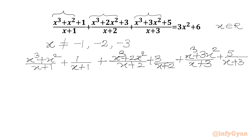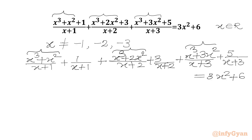In the RHS we have 3x² + 6. Now we will take x² common from the first numerator, x² common from the second, and x² common from the third numerator.